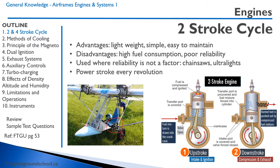Let's start discussing both the two-stroke and four-stroke cycle of an engine. Starting with the two-stroke cycle: a two-stroke engine is considerably lighter than a four-stroke engine. It's simple and easy to maintain. It's the type of engine you might find on a chainsaw, or in this case, what I believe is a Lazare — an ultralight aircraft that has two large chainsaw-type engines on the wing driving it.